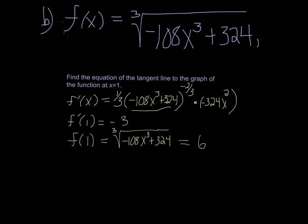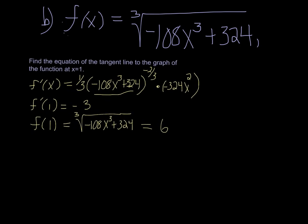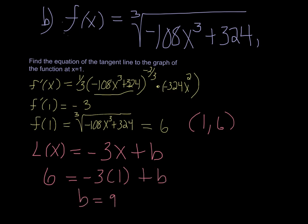Alright, just squishing this up a little bit so I can finish writing. Alright, so (1, 6) is a point on our graph. And we're not trying to predict a nearby point. This time we're trying to find the equation of the tangent line to the graph of this function. So we have the slope, and we're going to call this line L because we're doing tangent line approximations. So so far we know that we have negative 3x plus b. And now that we have a point (1, 6), we can plug that in, and we can see that our b is 9. So our tangent line is negative 3x plus 9.